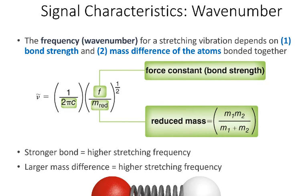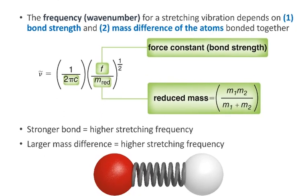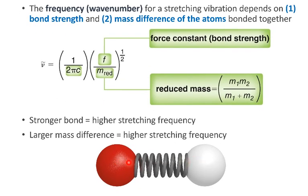Let's talk about wave number — at what frequency our compound absorbs infrared radiation. We can think of our atoms involved in the vibration as being connected by a spring. Two things determine the vibrational frequency: the force constant, which is essentially the strength of the bond (higher force constant means stronger bond and higher stretching frequency), and the reduced mass in the denominator. The heavier the atoms involved in the vibration, the lower the frequency is going to be.